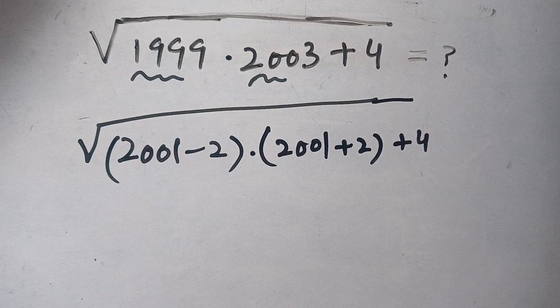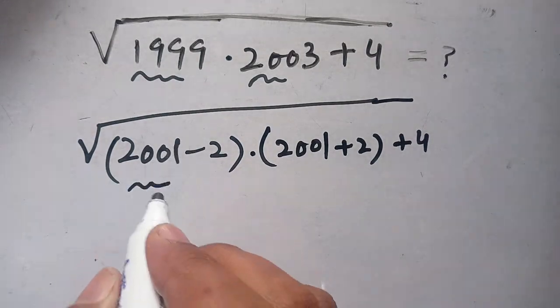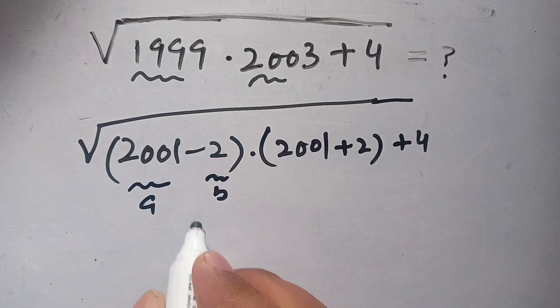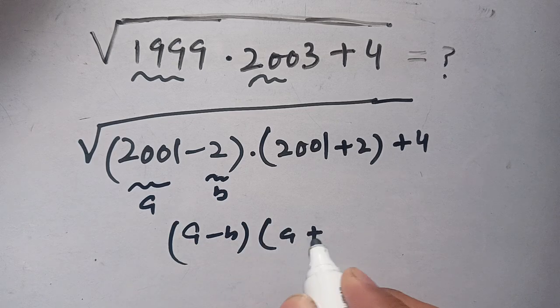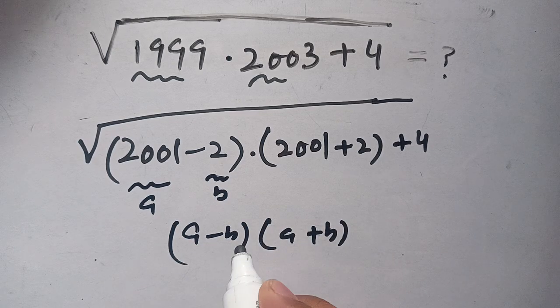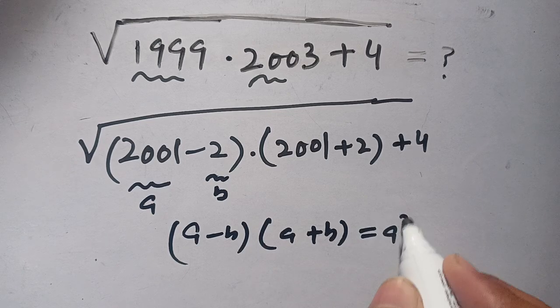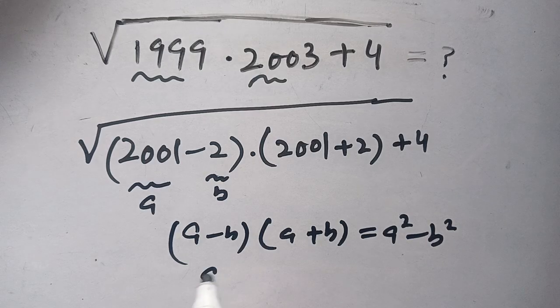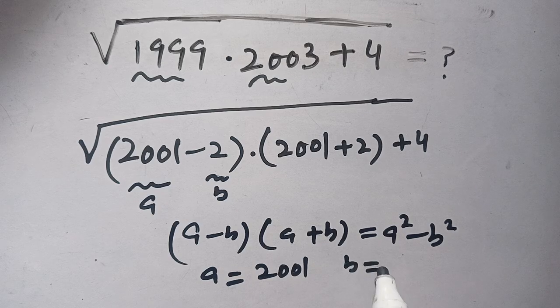Now in the next step, let us consider that 2001 is a and 2 is b. Now it is in the form of (a - b) times (a + b). We know that (a - b) times (a + b) is equal to a² - b². Here a is equal to 2001 and b is equal to 2.